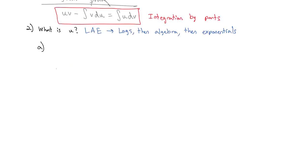Let's look at an example: the integral of x to the fifth times natural log of x, dx. Substitution won't work here. Using LAE, u starts with logs, so we make u equal to the natural log of x, and dv becomes the rest: x to the fifth dx.